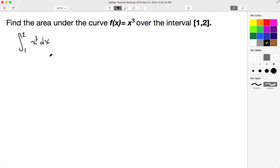To do this integration, I know that I need to increment the power from 3 to 4, and I'll also increment the denominator to that same power of 4. In this square bracket notation, I show the interval from 1 to 2.